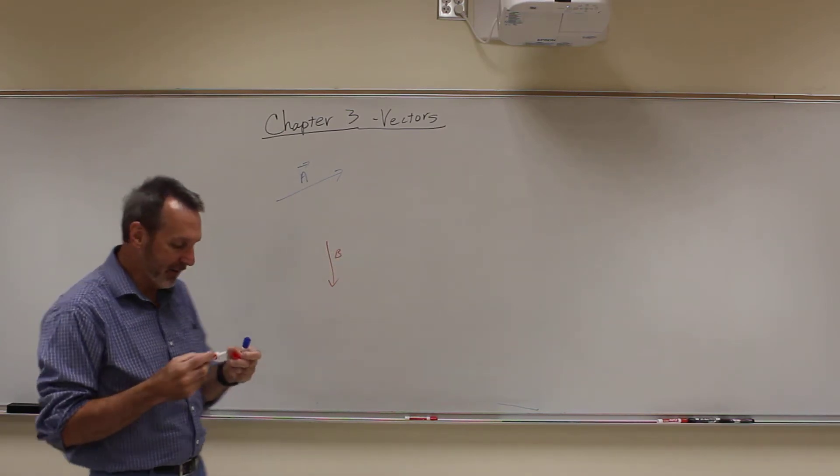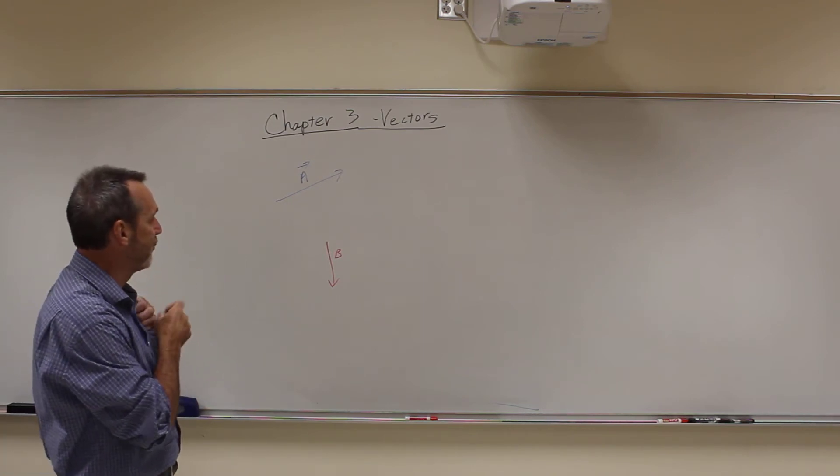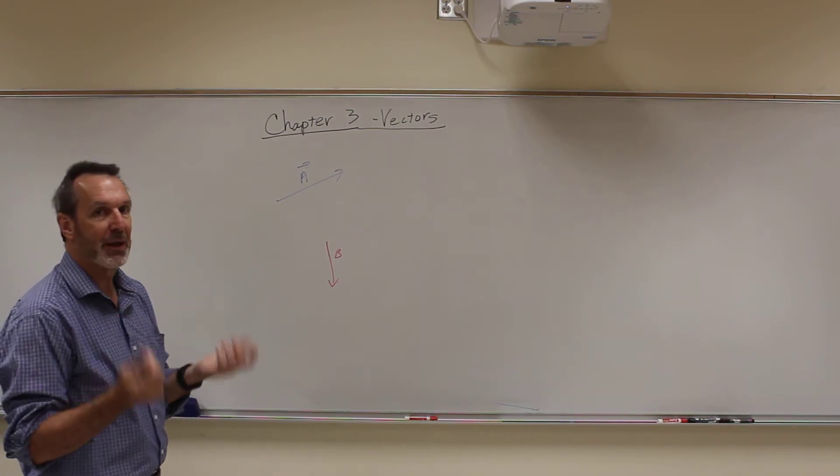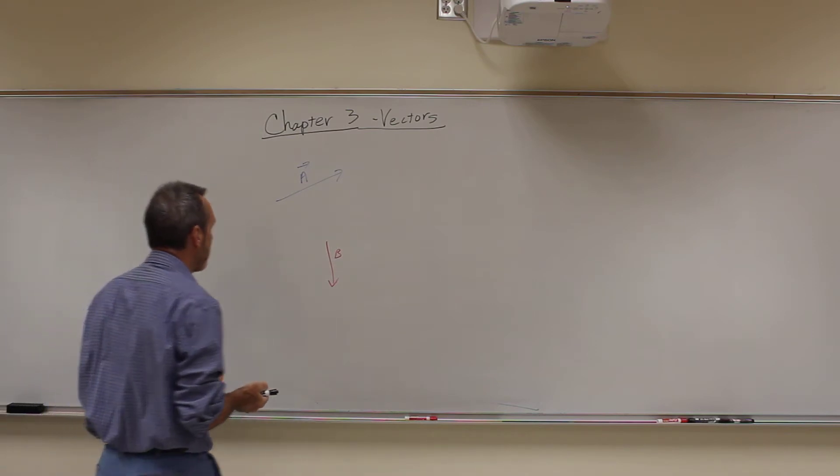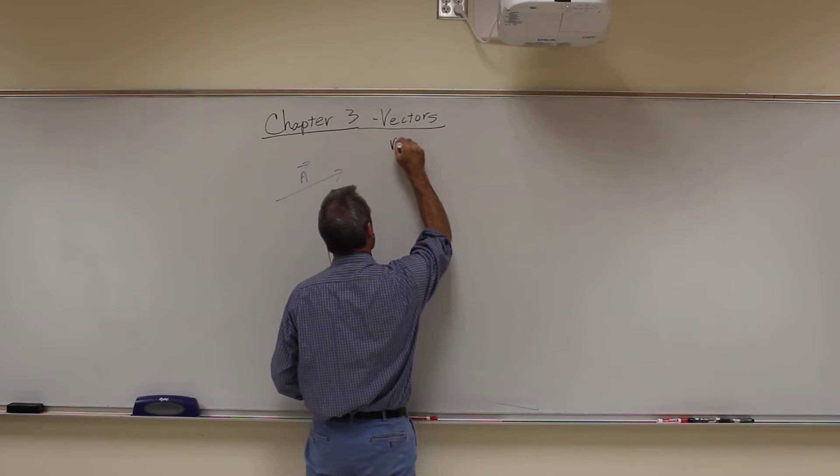That's the way to graphically add them, but that doesn't work well in most cases, because in most cases you don't have it drawn out precisely. We want to get a mathematical way to do this. And so what we're going to do in this one is do what we call vector components.